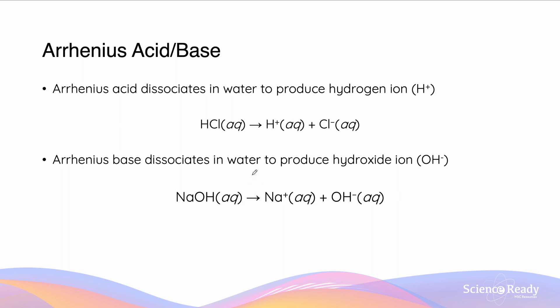An Arrhenius acid is a compound which dissociates in water to produce the hydrogen ion. Here we have hydrochloric acid which dissociates to produce the hydrogen ion and the chloride ion. Because there is a formation of this hydrogen ion, we say that hydrochloric acid is an Arrhenius acid.